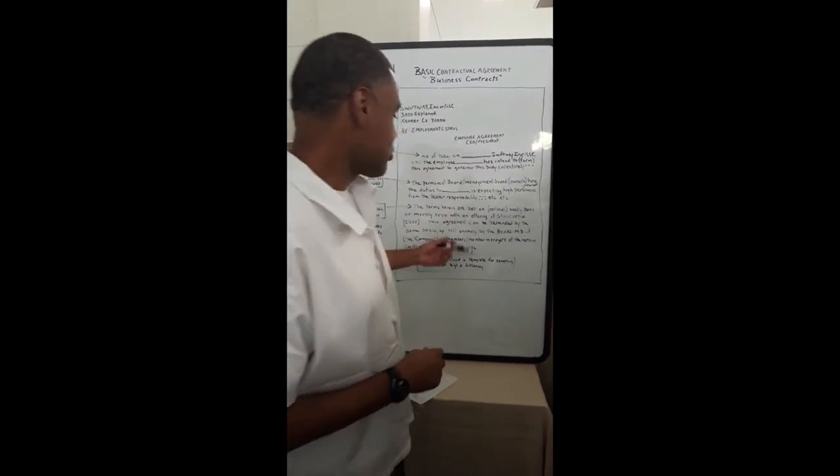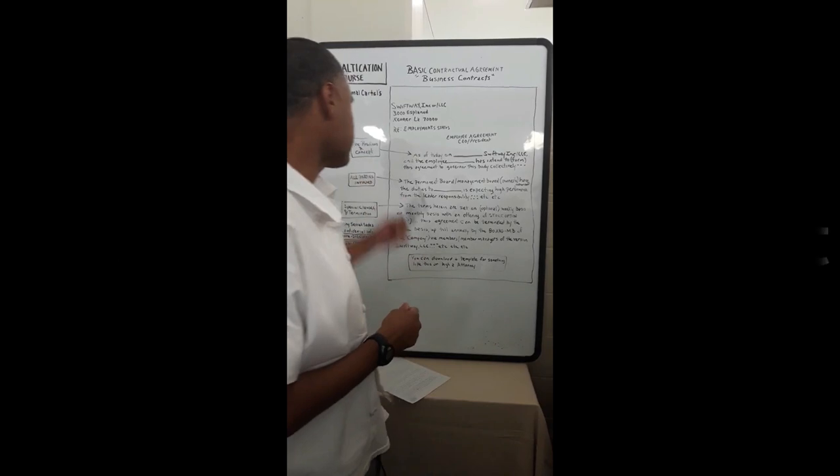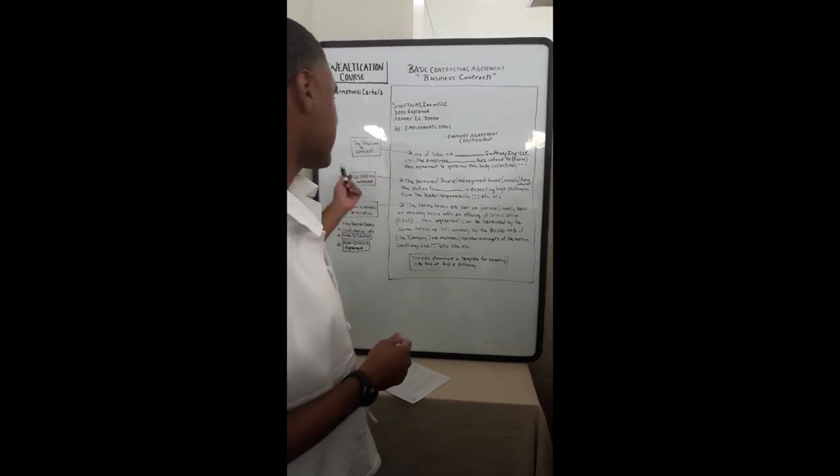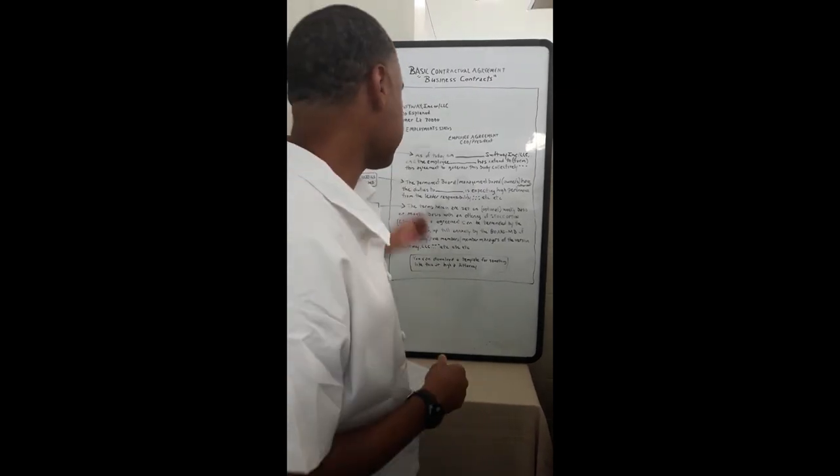Right here we're going to break down three different paragraphs. So right here it breaks down the position and concept which is based on what you call your agreed CEO and president. So it goes like this, as of a date on such and such, Swiftway Inc., or LLC.